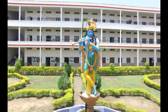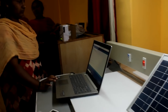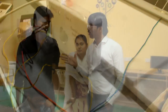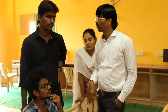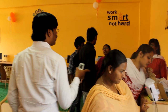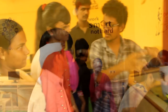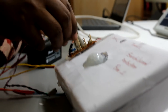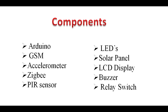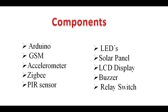To overcome all these problems, the students of BITS Kurnool implemented a prototype using IoT. The components used in this project are: Arduino, GSM, Accelerometer, Zigbee, PIR Sensor, LED, Solar Panel, LCD Display, Buzzer, and Relay Switch.